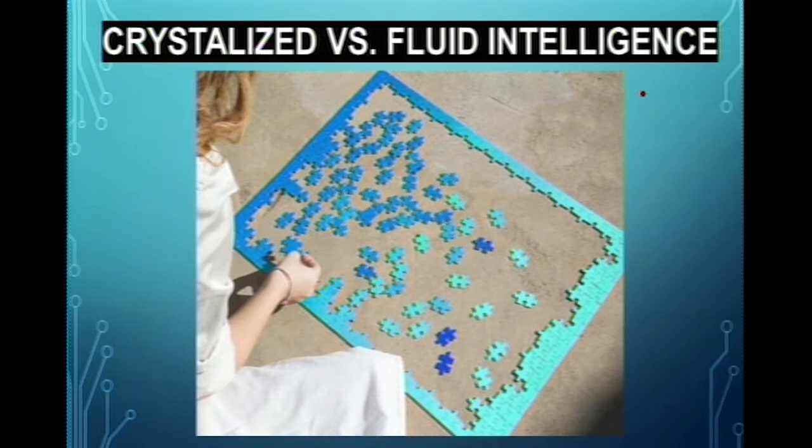To use the puzzle example: if you've done a particular puzzle four or five times and have a really good memory of how to do it, you would be said to have high crystallized intelligence, because you would put that puzzle together faster than someone who doesn't have that prior knowledge.